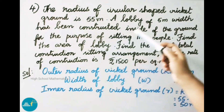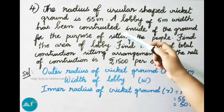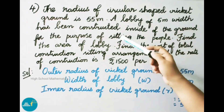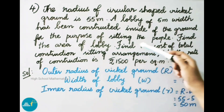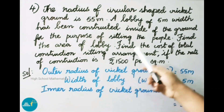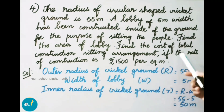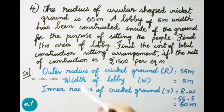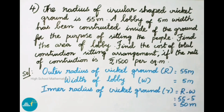Question number 4: The radius of a circular shaped cricket ground is 55 meters. A lobby of 5 meters width has been constructed inside the ground for the purpose of seating the people. Find the area of the lobby. Given: outer radius, capital R = 55 meters; width of lobby W = 5 meters. Inner radius = R − W = 55 − 5 = 50 meters. Therefore, inner radius of cricket ground is 50 meters.